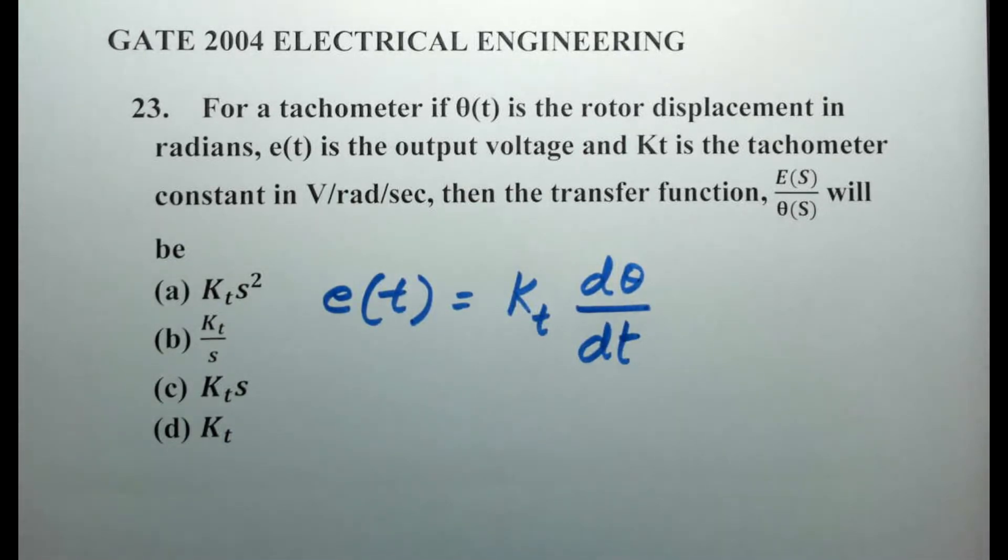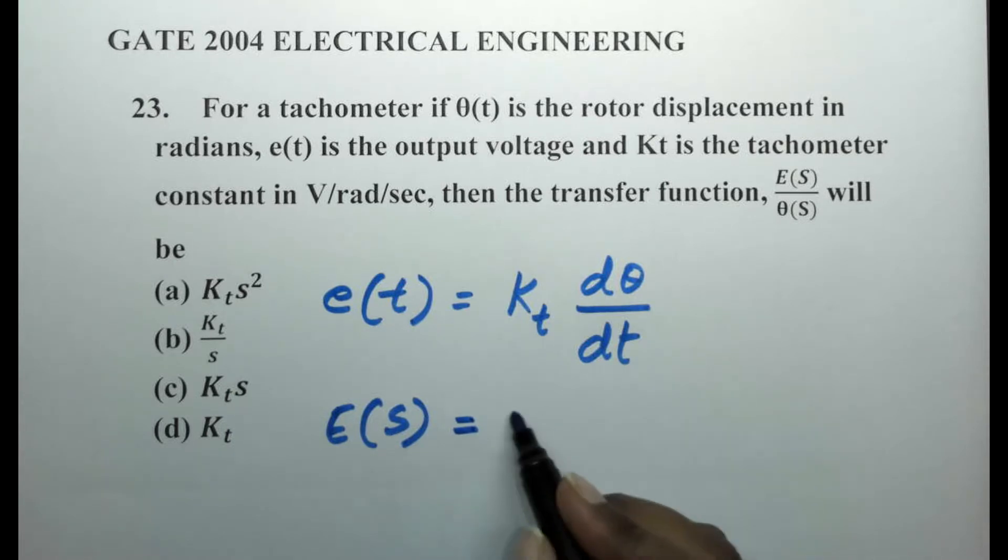This is in time domain. Now if we have to convert this into s domain, what happens? Here we have e of t will become e of s, the constant kt, and d theta by dt can be written as s into kt into theta of s.